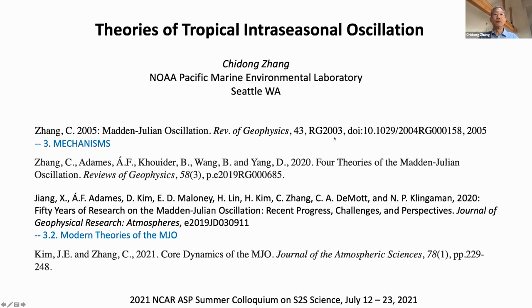The first publication is an MJO review where Section 3 on Mechanism includes discussions of early attempts at understanding the MJO through theories. The second paper from 2020 is a review of four MJO theories in very detailed comparison — a good paper to study if you're interested in MJO theories. The third, also from 2020, is a broader MJO review covering recent progress, with Section 3.2 discussing modern theories. The last one, just published earlier this year, is not included in that review paper, which is why I listed it here.